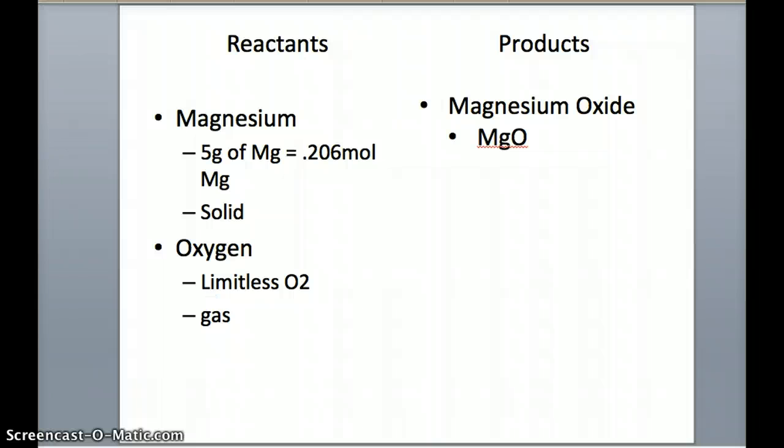In this particular reaction, we have magnesium, which is in a solid form, and oxygen, which is in the gaseous state. The product is magnesium oxide, which is a solid.